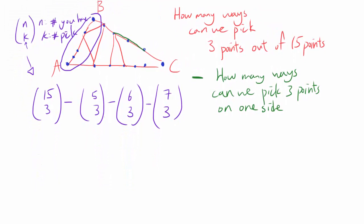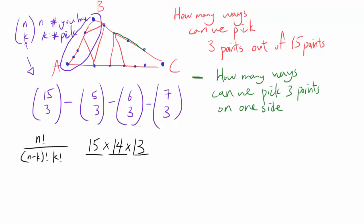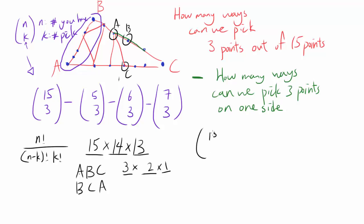To evaluate combinations, recall that n choose k equals n factorial divided by (n minus k) factorial times k factorial. More conceptually, for 15 choose 3: there are 3 slots — the first can be filled 15 ways, the second 14, the third 13. Since order doesn't matter, divide by 3! (3 times 2 times 1), which accounts for the ways to rearrange three things.